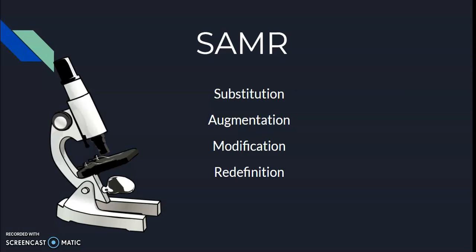SAMR is about integrating technology into the classroom and revamping and improving an assignment or assessment. We created a project, and mine was how to use a microscope. The first thing I would give students is a piece of paper with a picture of a microscope for them to label, and then write a one-page summary on how to take care of and use a microscope. Substitution means you replace the technology but there's no real functional change — instead of using pen and paper, they would use a Word document, and substitute the piece of paper with a picture for a real microscope.